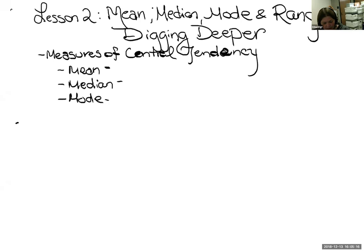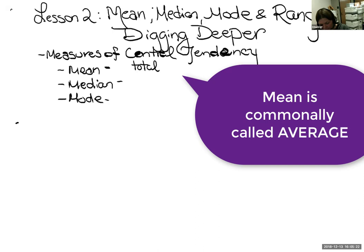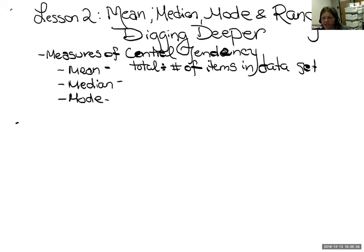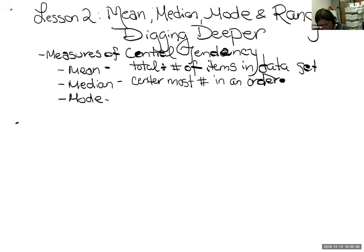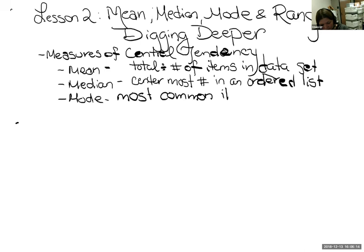Mean is what we would all have if we all shared equally — you take the total and divide it equally among the number of items in the data set. I hate how some teachers teach 'add and divide' because that's not always true. Median is the centermost number in an ordered list. Mean and median only work for quantitative data — data that's in numbers. Mode works for quantitative or qualitative data, numbers or words, so we call it the most common item in the data set.